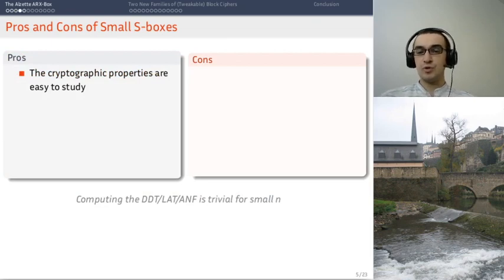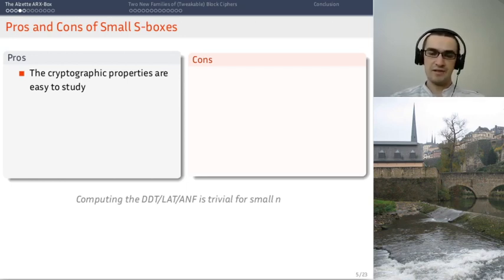This is the case of small s-boxes, which is the case usually. In Keccak, it's five bits. In the AES, it's eight bits. And these are pretty typical block sizes for s-boxes.